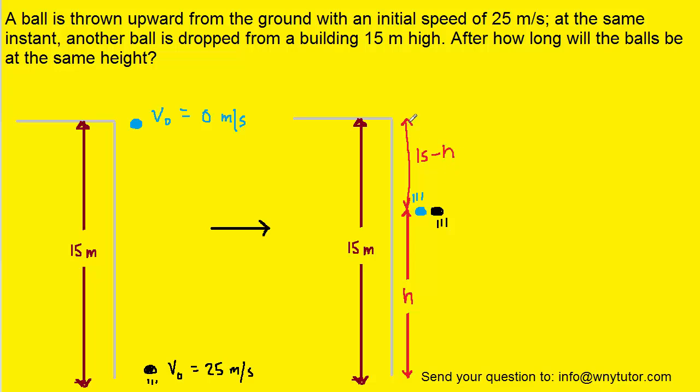So it's important to understand that the blue object or the blue ball falls a distance of 15 minus h, whereas the black ball travels a distance of h.